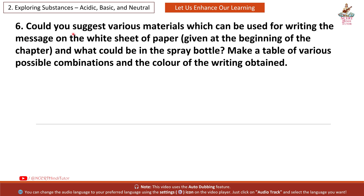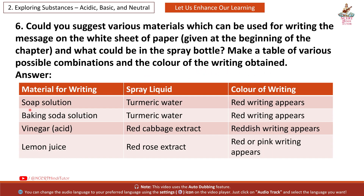Question 6: Could you suggest various materials which can be used for writing a message on white sheet of paper and what could be in the spray bottle? Make a table of various possible combinations and the colour of the writing obtained. Answer: Material for writing — Soap solution; Spray liquid — Turmeric water; Colour of writing — red writing appears. Material for writing — Baking soda solution; Spray liquid — Turmeric water; Colour of writing — red writing appears.